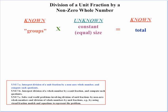"Groups" is in quotation marks because since we're dealing with fractions, sometimes we're going to have to take that idea of groups with a grain of salt — it might actually be better thought of as parts instead of groups. So let's take a scenario where we have one-fourth as the total, three groups, and we're looking for the size.